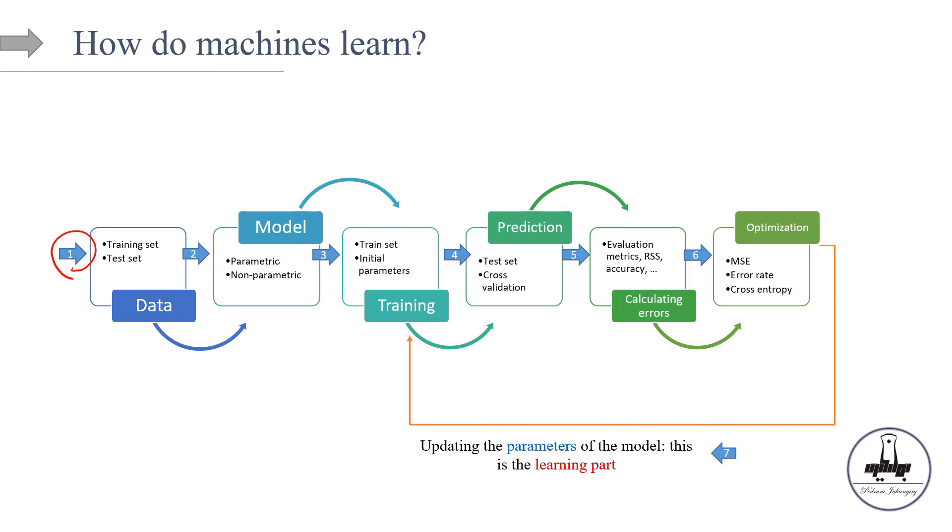After optimization, it is time to update the parameters of the model. This is the learning part, where the model learned the pattern. So, basically, by learning the pattern, we mean that learning the bias and the weights.